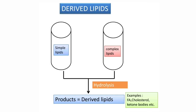The third type of lipids is derived lipids. The name itself indicates these are derived from simple lipids and complex lipids. When we take simple lipids or complex lipids and hydrolyze them, the products formed are called derived lipids. For example, fatty acids, cholesterol, and ketone bodies.